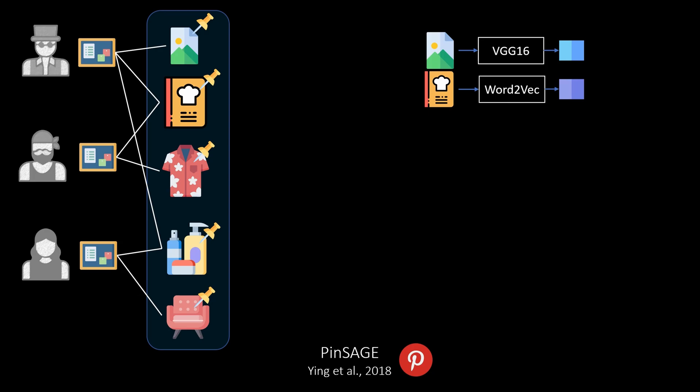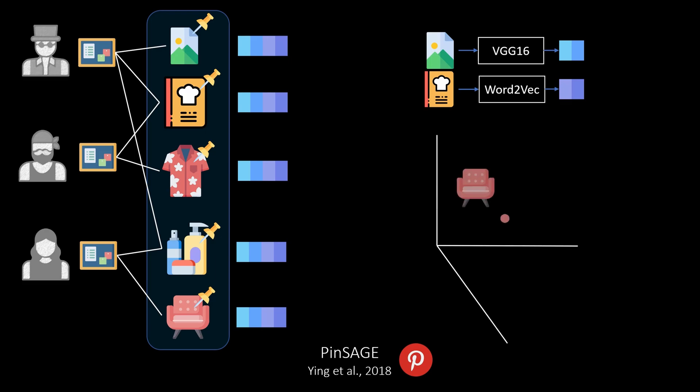As a result, each node could be represented by a combined vector of visual and textual information. In the end, this model produces embeddings in a joint embedding space, which can be used to find their nearest neighbor in order to recommend related pins.